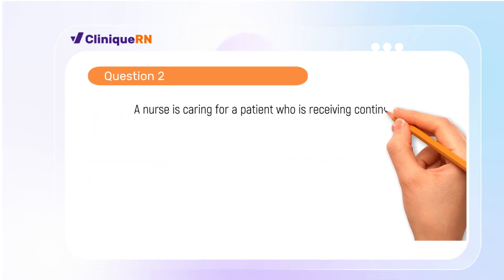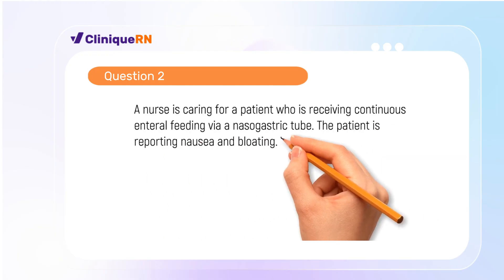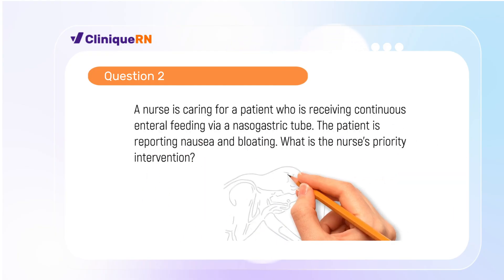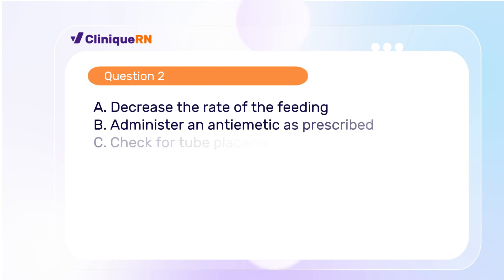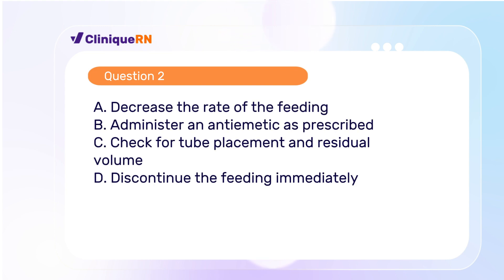Question two. A nurse is caring for a patient who is receiving continuous enteral feeding via a nasogastric tube. The patient is reporting nausea and bloating. What is the nurse's priority intervention? A. Decrease the rate of feeding. B. Administer an antiemetic as prescribed. C. Check for tube placement and residual volume. D. Discontinue the feeding immediately.